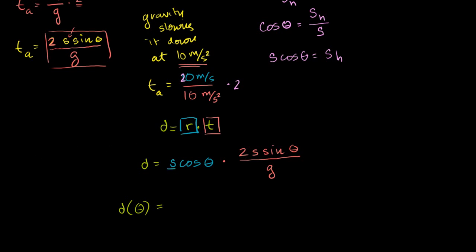This s times 2s divided by g is 2 times s squared over g. So 2s squared over g times cosine of theta times sine of theta.